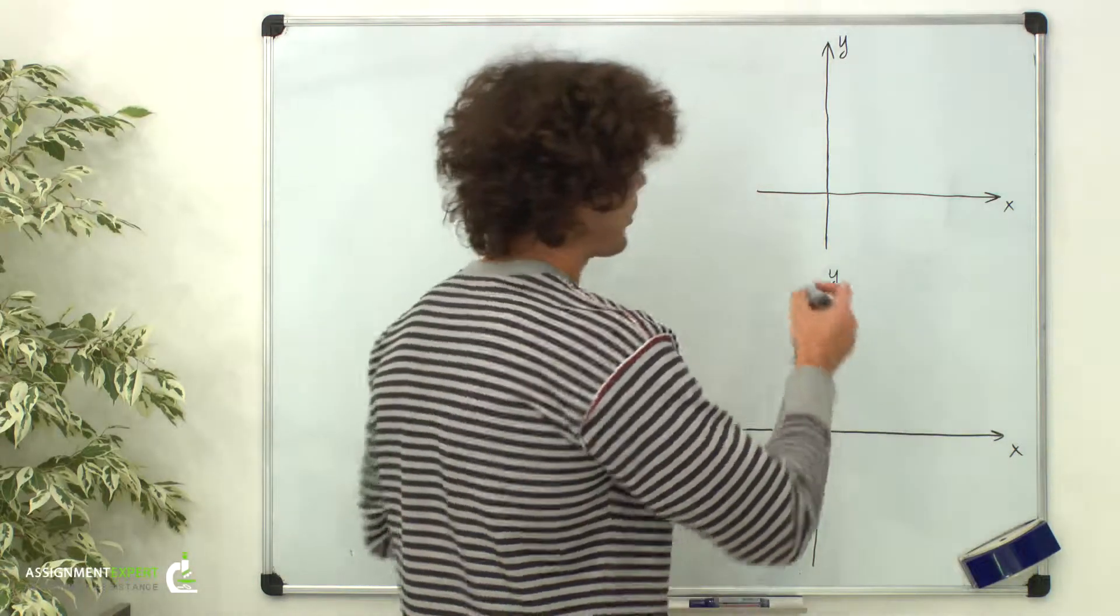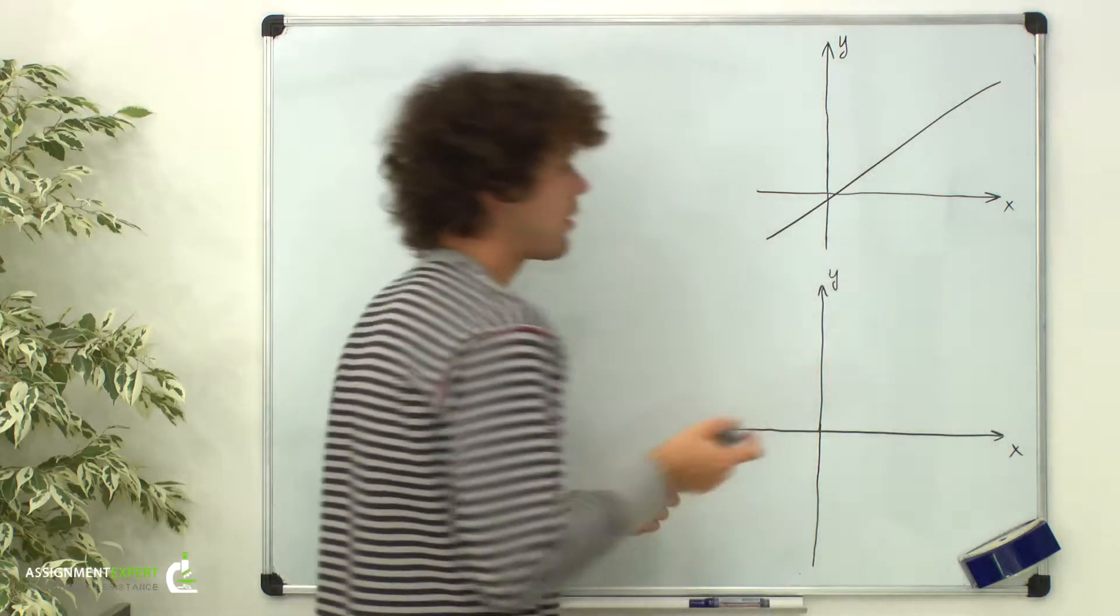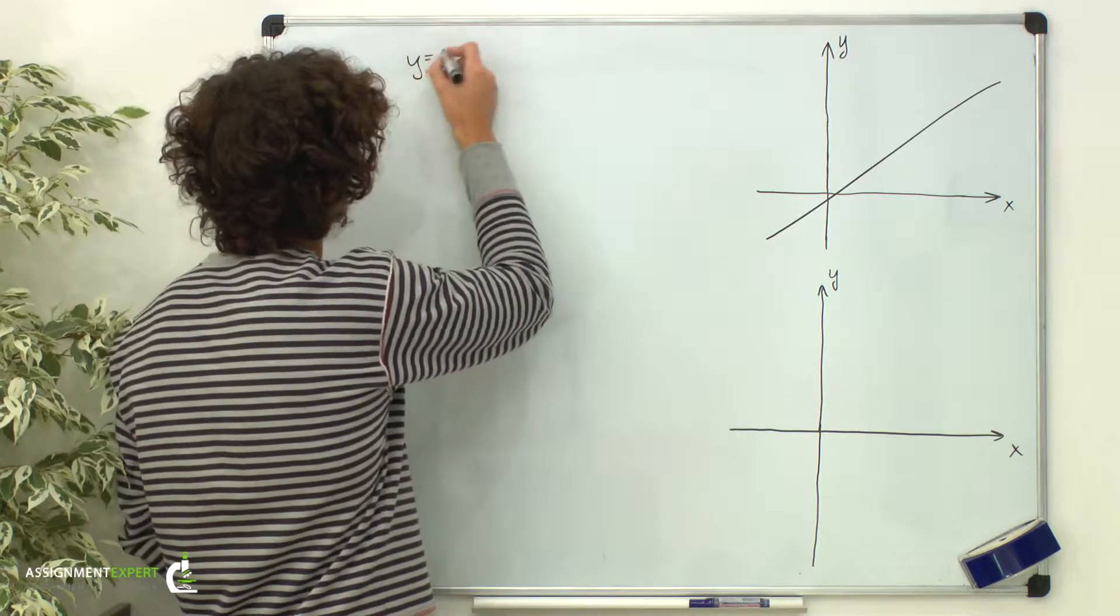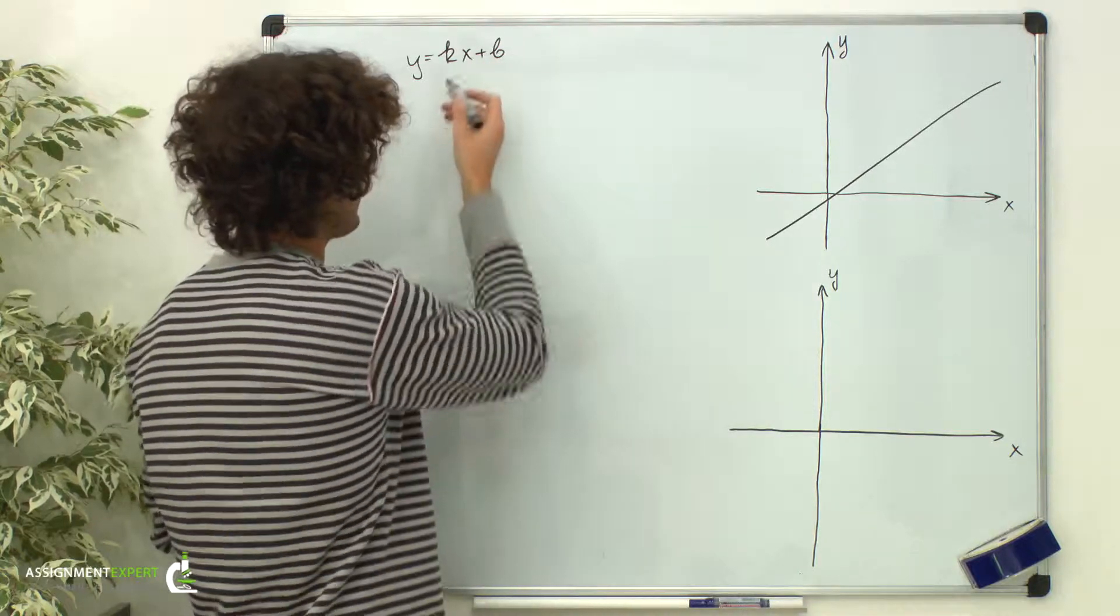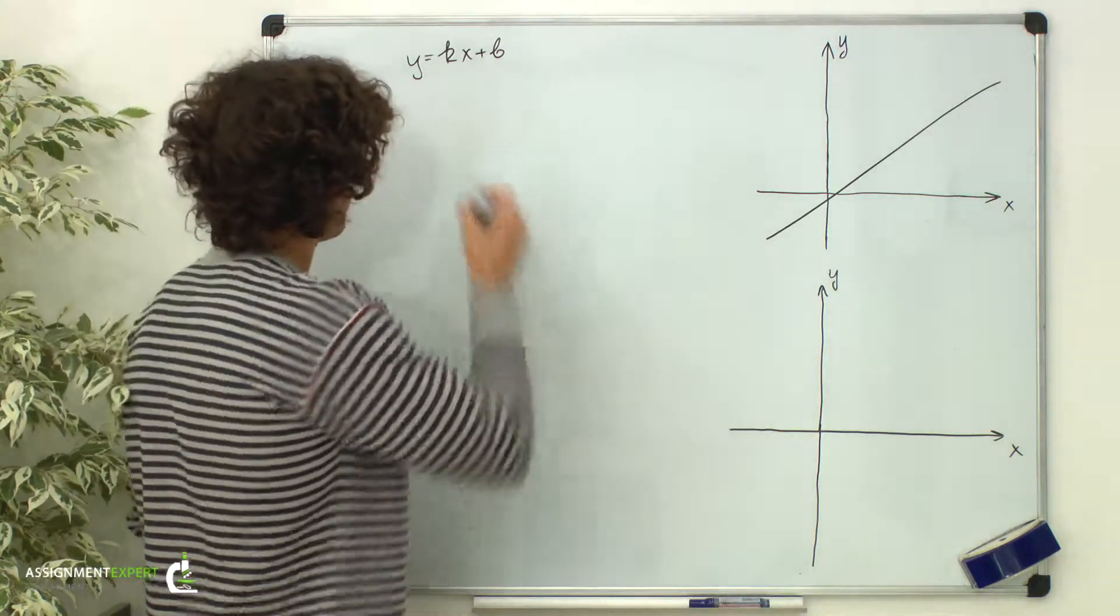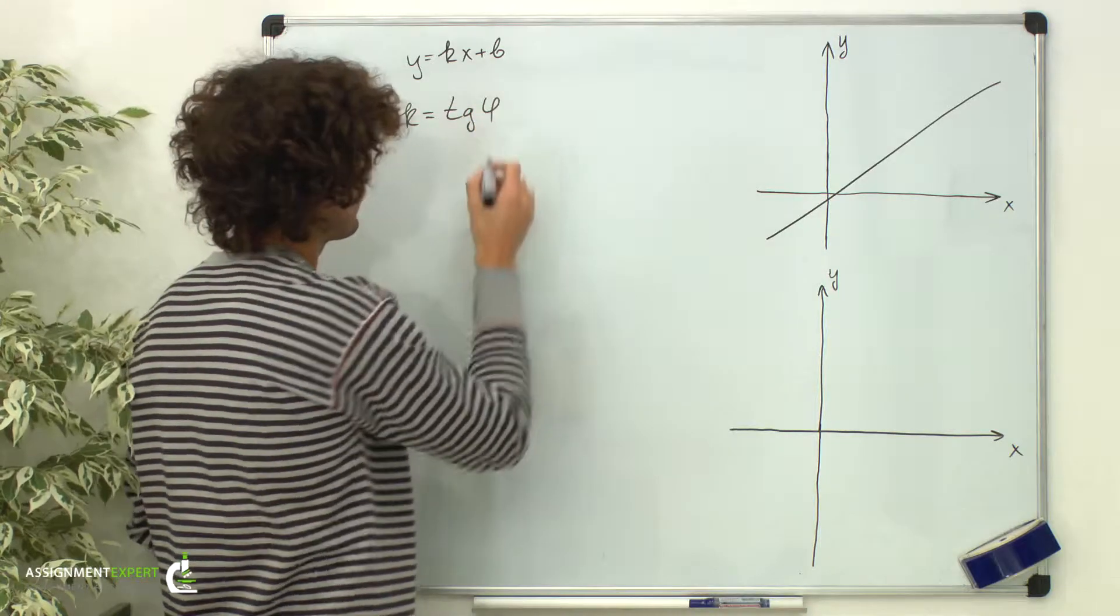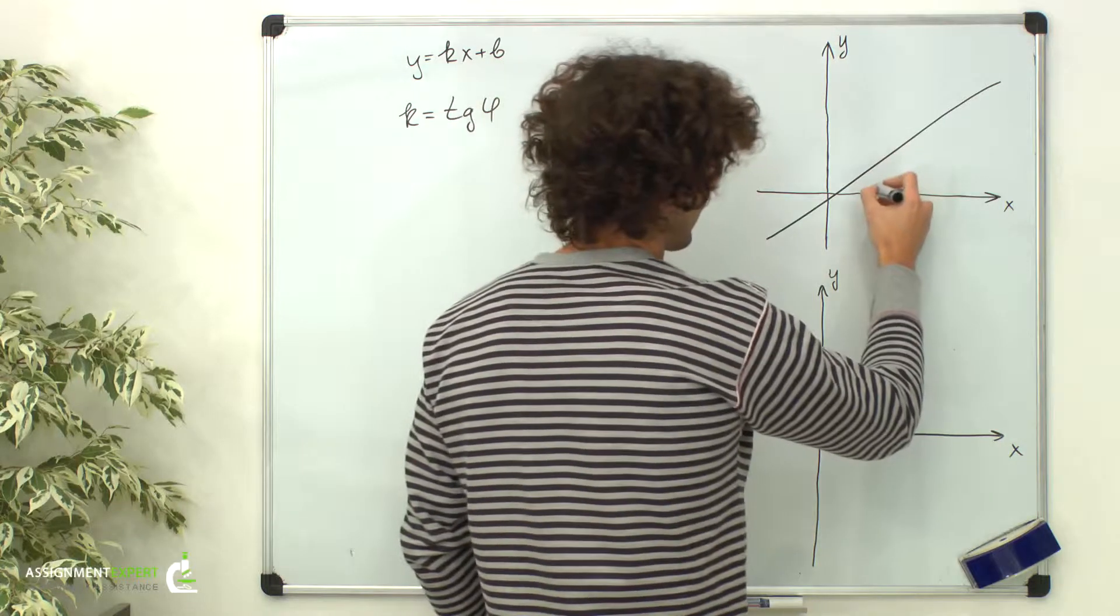Well, suppose we have a line on a plane. The general equation of a line in slope-intercept form is y equals kx plus b, where k is the slope of the line. Actually, k equals the tangent of phi, and phi is the angle between the positive direction of x-axis and our line.